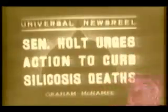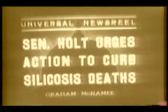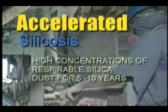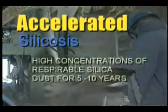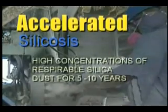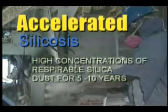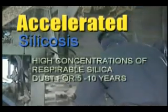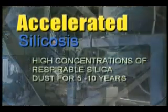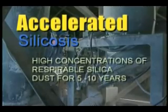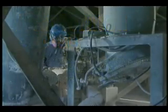Silicosis was taking its toll from the ranks of American workers. Congress investigated the building of Hawksnest Tunnel, known as the Village of Death. Accelerated silicosis can result from working in areas of high concentrations of respirable silica dust for a period of five to ten years. It is disabling and often results in death, and it can progress more rapidly than chronic silicosis even if the worker is removed from exposure.